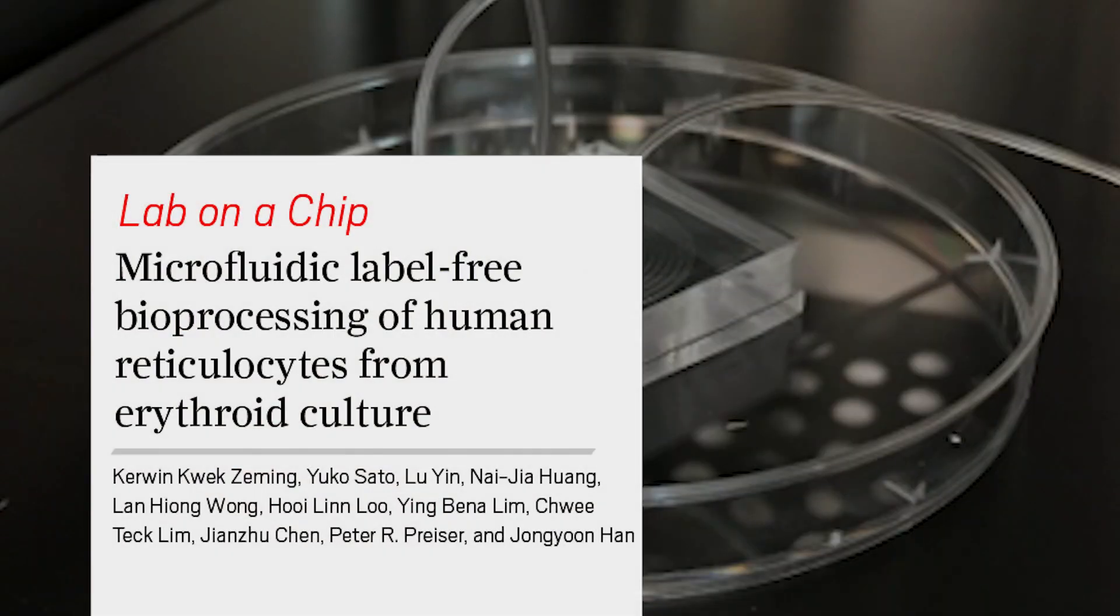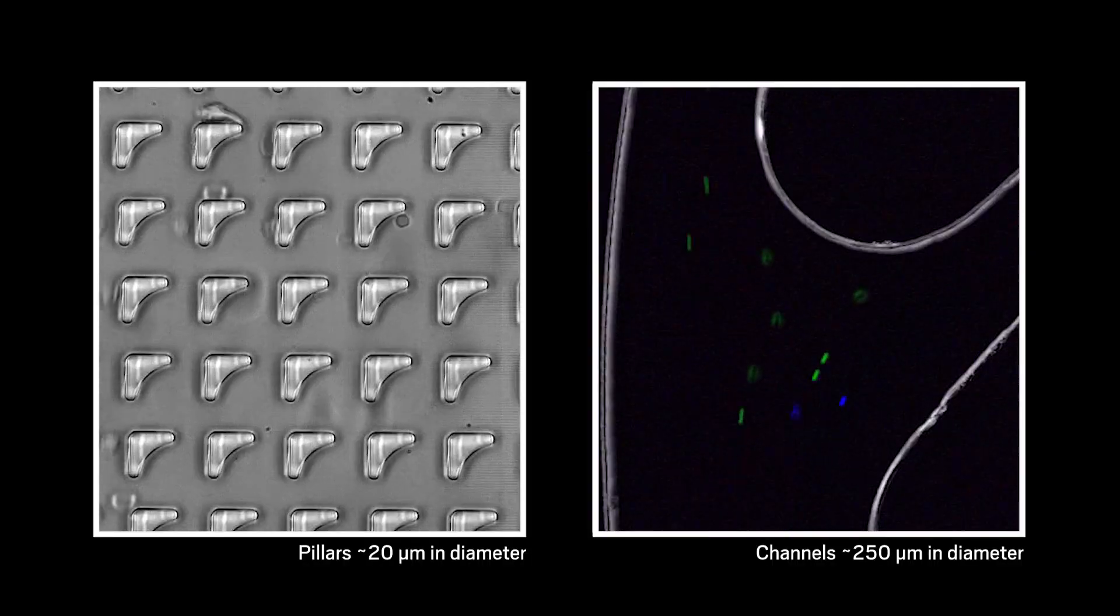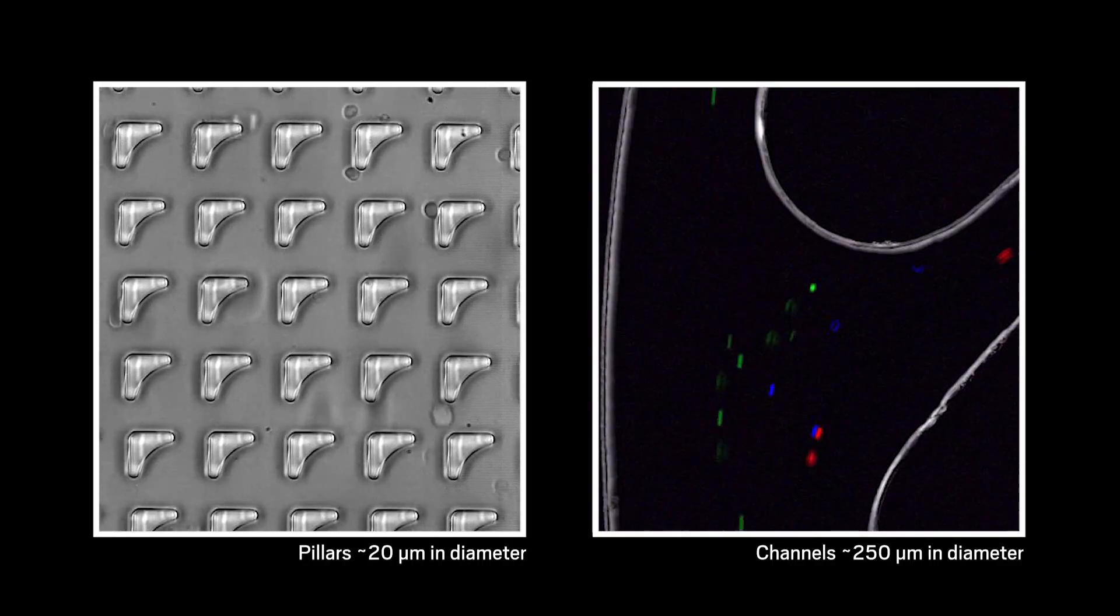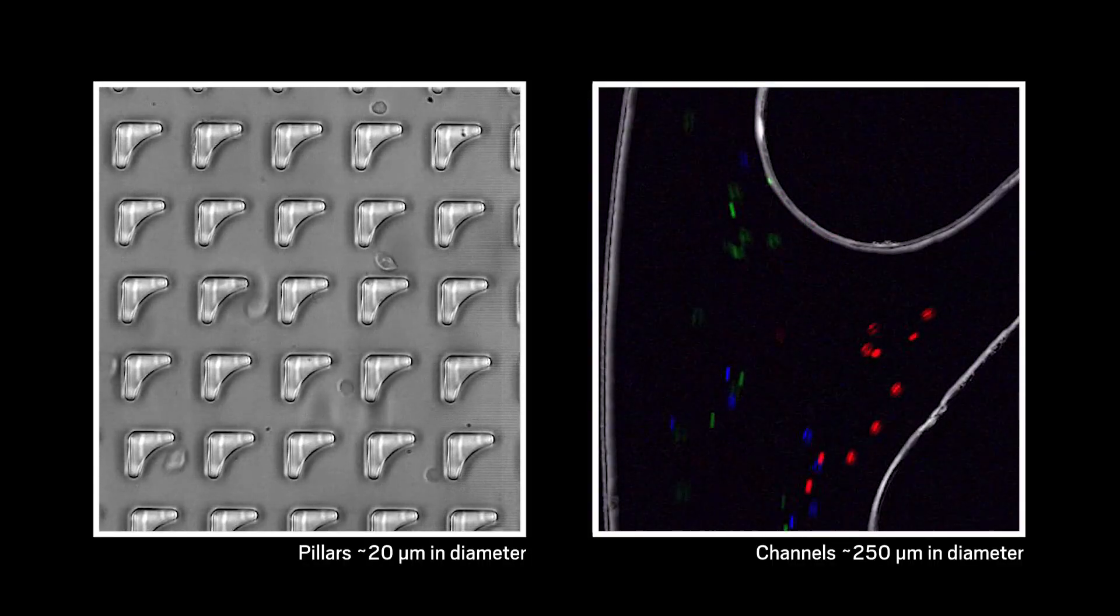Now, researchers at the Singapore-MIT Alliance for Research and Technology have refined two low-cost sorting methods that could increase scientists' access to these rare reticulocytes for malaria research.